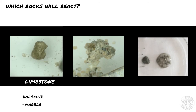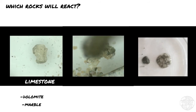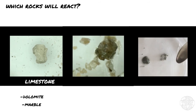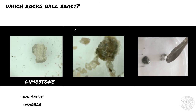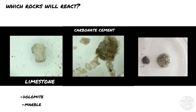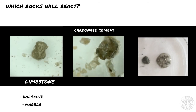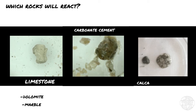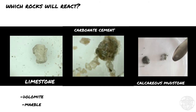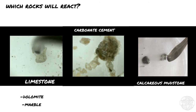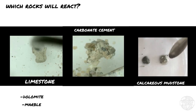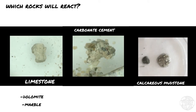Many other rocks contain small amounts of calcite or other carbonate minerals, and these will also react. For instance, sedimentary rocks like sandstone, siltstones and conglomerates may be bound together with calcite or dolomite cement that will also react with the acid. Also, many mudstones, when originated from environments where clay minerals and carbonate minerals were deposited at the same time, will show a reaction with the acid. This is the case of this calcareous mudstone that was formed in a lacustrine environment.